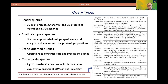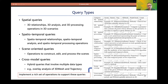GANIS supports spatial queries, spatial-temporal queries, scene-oriented queries, and cross-model queries. Traditional spatial RDBMSs are very mature in spatial queries, but they have limited support for spatial-temporal and scene-oriented queries. GANIS has implemented hundreds of operations to support these query types.